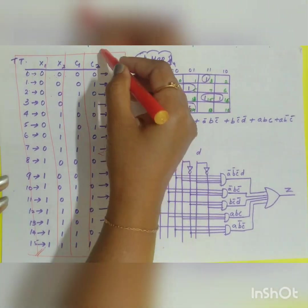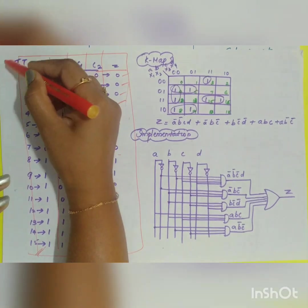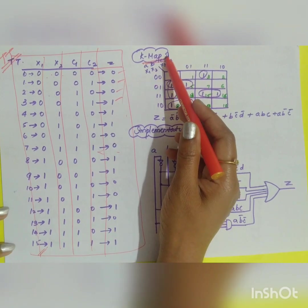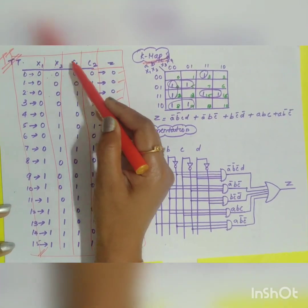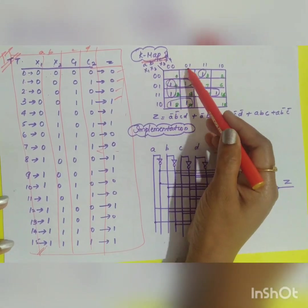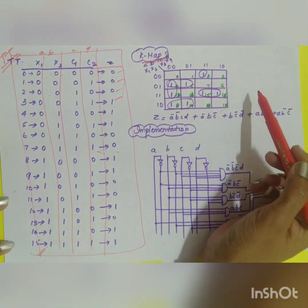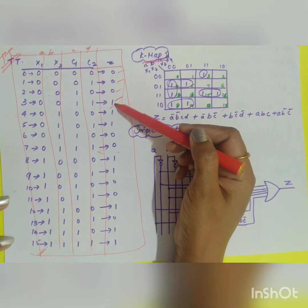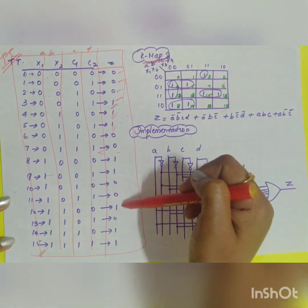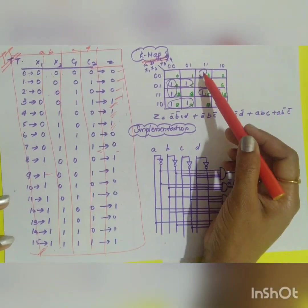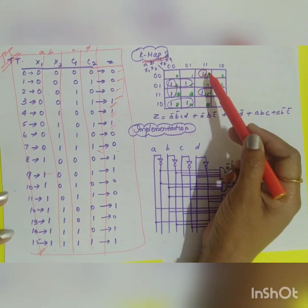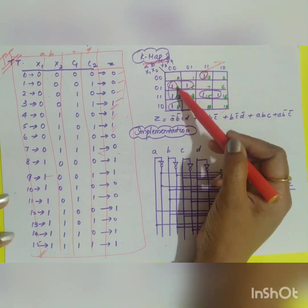Now solve it using a K-map. Take variables x1, x2, c1, c2 — or label them a, b, c, d. Fill in 1s wherever you have minterms: 3, 4, 5, 8, 9, 12, 14, and 15. Once the K-map is filled, identify the groupings — only single groupings can be formed for some cells; this two, this two, this two, and this two can be grouped.